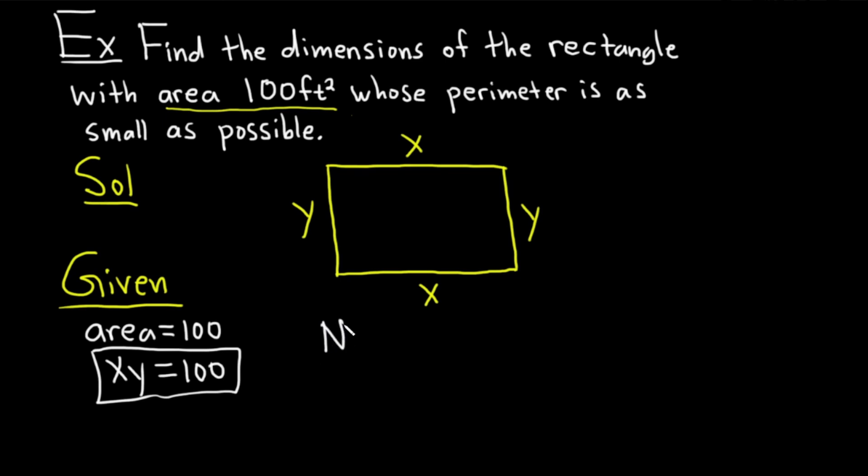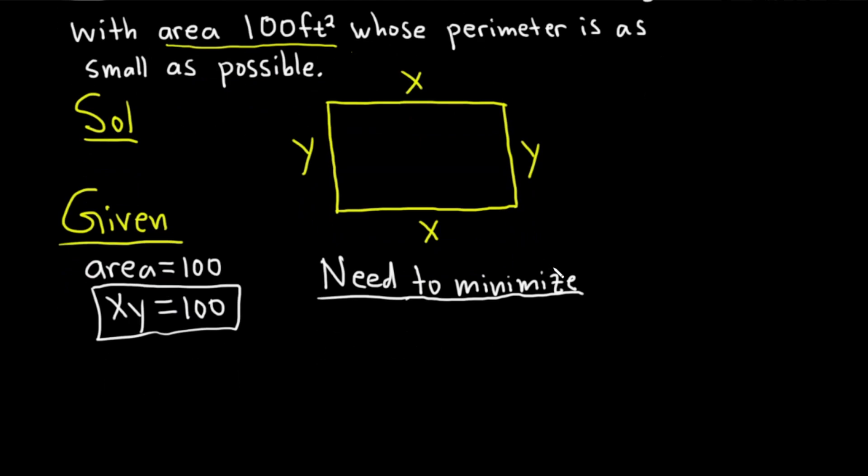Now let's write down what we need. The question wants us to find the dimensions whose perimeter is as small as possible. We basically want to make the perimeter small. We need to minimize the perimeter. That's why it's called an optimization problem. Optimization problems are concerned with maximizing and minimizing various things.